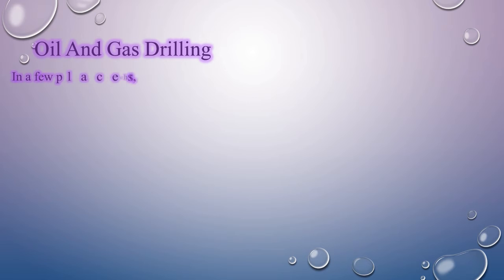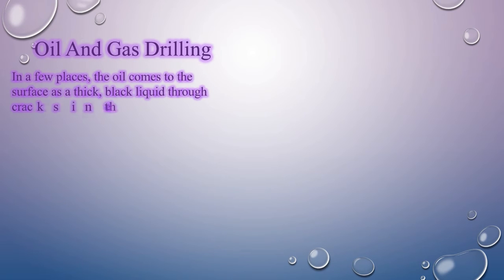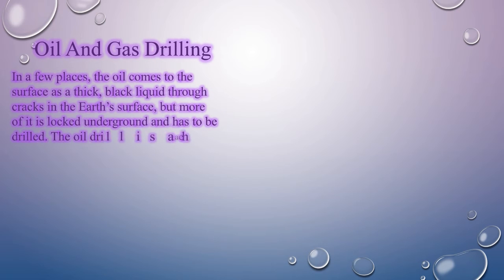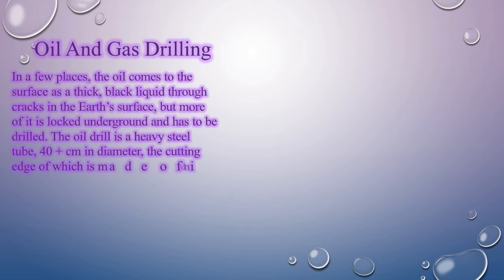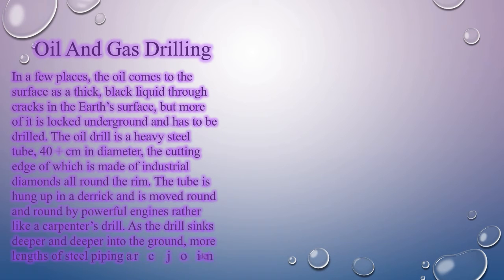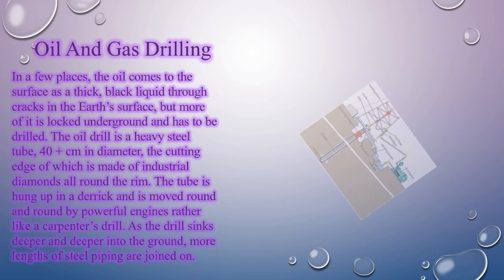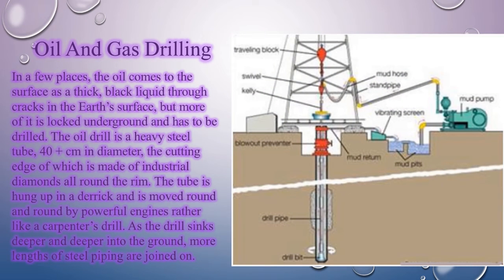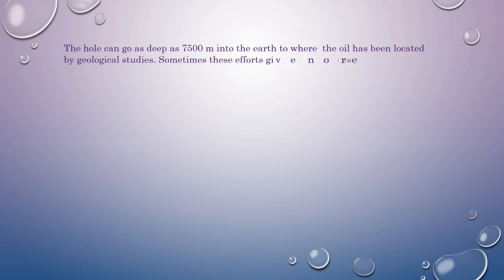Oil and Gas Drilling: In a few places, oil comes to the surface as a thick black liquid through cracks in the earth's surface, but most of it is locked underground and has to be drilled. The oil drill is a heavy steel tube, over 40 cm in diameter, with a cutting edge made of industrial diamonds around the rim. The tube is hung up in a derrick and moved round and round by powerful engines, rather like a carpenter's drill. As the drill sinks deeper into the ground, more lengths of steel piping are joined on.